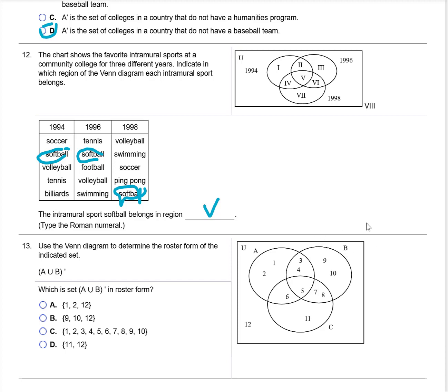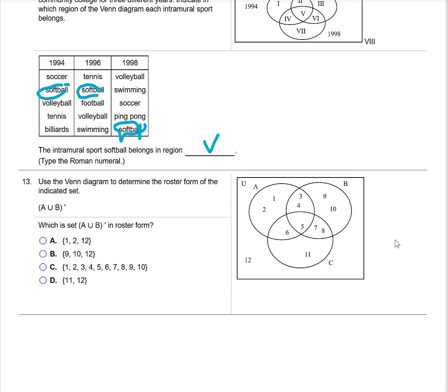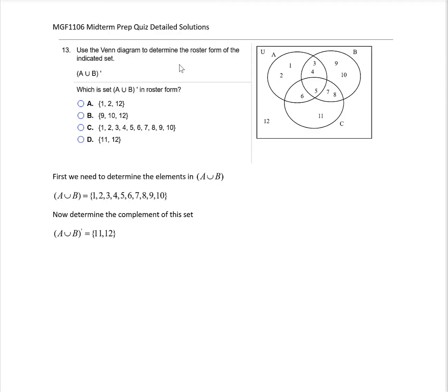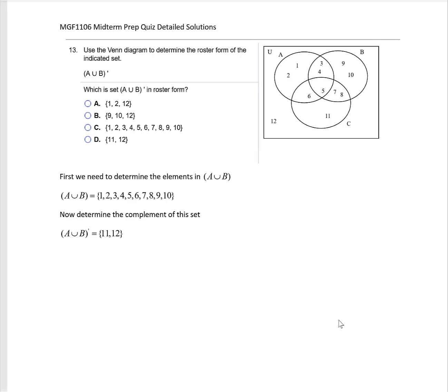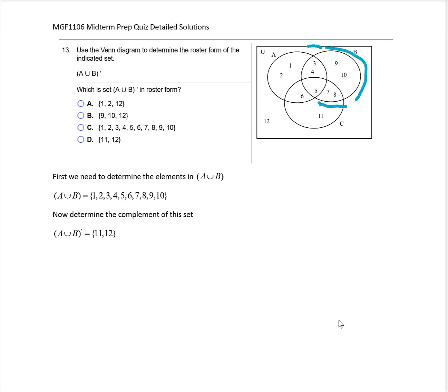For question 13, they've given a Venn diagram with elements in the various sets and want the roster form of the indicated set. They want us to find A union B, the complement of that set. First I find A union B — all the elements in A or B or both — which includes the numbers 1 through 10. Then taking the complement, those are all elements in the universal set not included in A union B. That gives us simply 11 and 12, which is choice D.